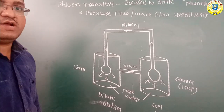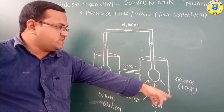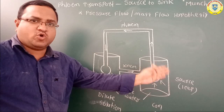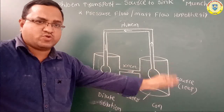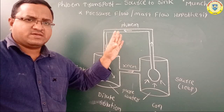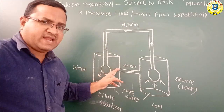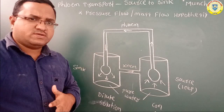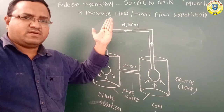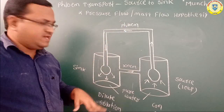This is the pressure flow or mass flow hypothesis by Munch. The source is the leaf where food is prepared. Glucose is synthesized here, converted into sucrose, then the sucrose moves into the companion cells, and from there into the living phloem sieve tubes. This leads to hypertonic conditions, because of which water from the adjacent xylem enters into the phloem.